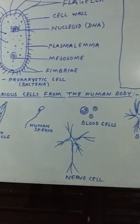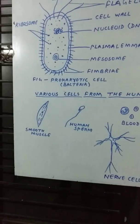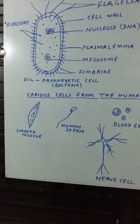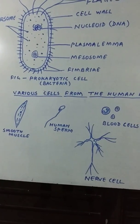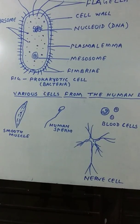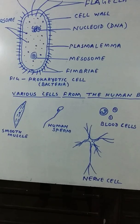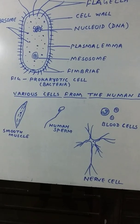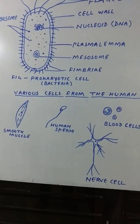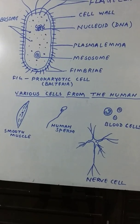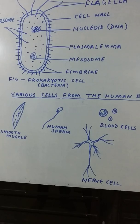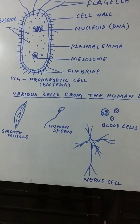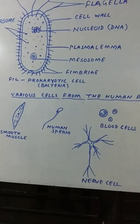Second point: some cells can change their shape, like amoeba and white blood cells, while most plant cells and animal cells have almost fixed shapes.